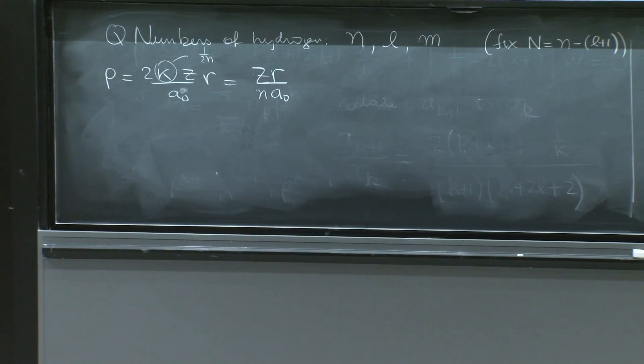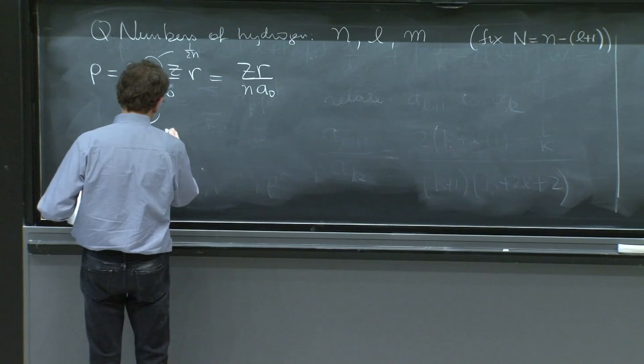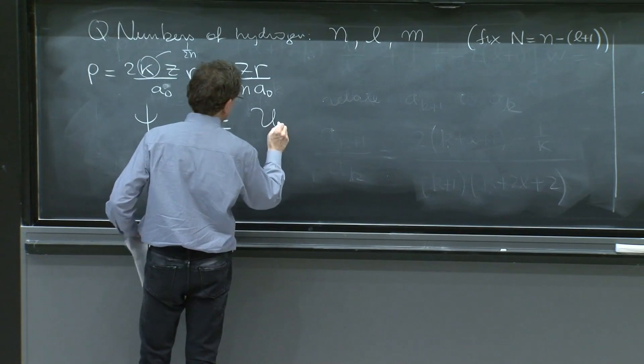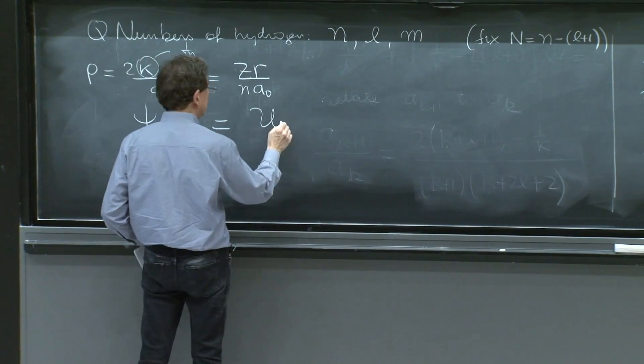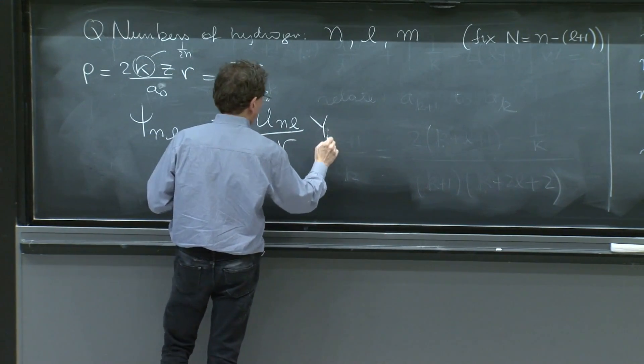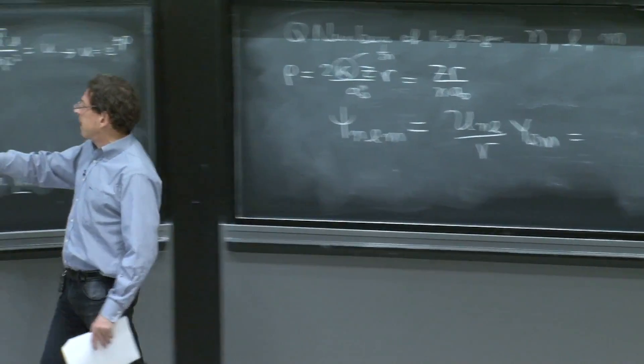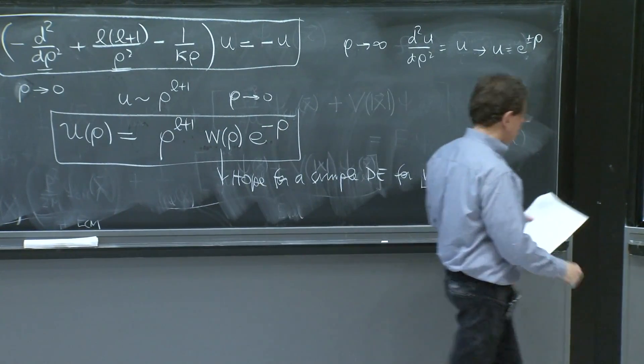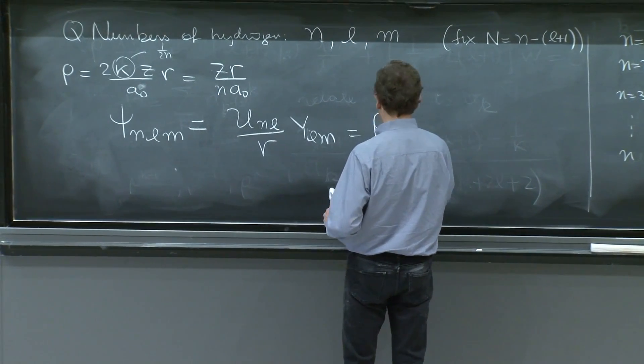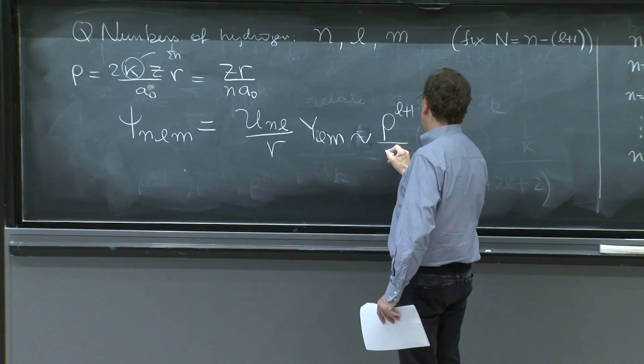So back to the solution. You see, we have to recap, recap quickly. Psi nlm is equal to u of the energy of the radial equation. So n and l is sufficient for that. Over r ylm. Or the u is the thing that we had here. u l, and now it has an energy into it. So it's a rho to the l plus 1, still r and rho up to numbers.